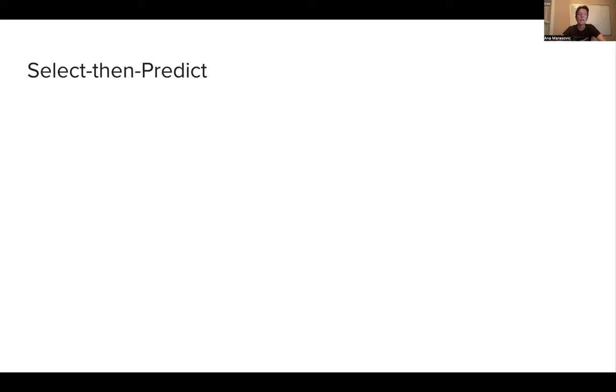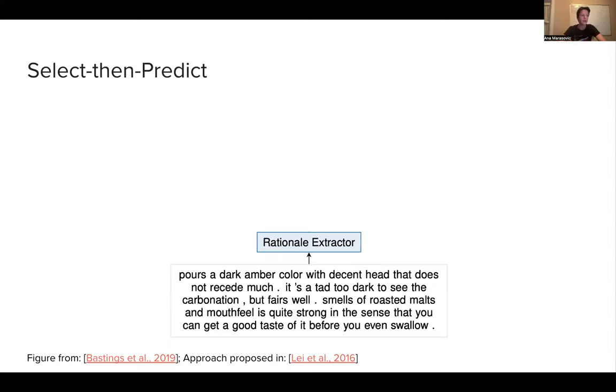And that's a kind of alternative to the gradient base highlighting, which is post hoc. You can also do a so-called select then predict approach where you are still going to highlight input tokens or pixels, but you are going to do that in a way that's inherent to the model. So let me show what I mean by that. Here we have some kind of beer review, and in select and predict approach, first thing we are going to do is actually extract which words here are important for predicting a label of this review.